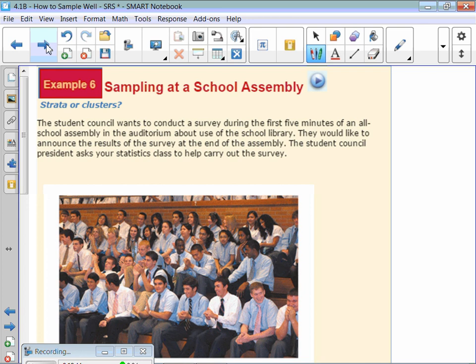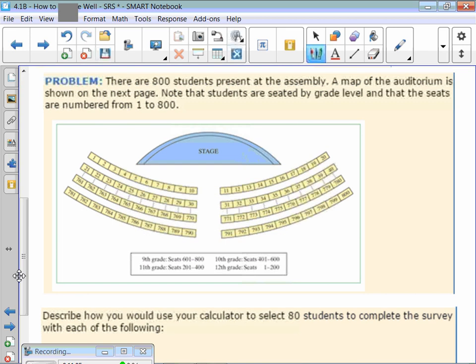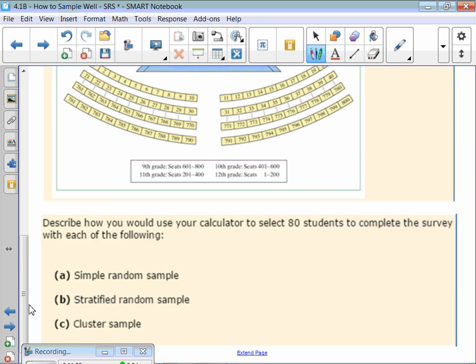The student council wants to conduct a survey during the first five minutes of an all-school assembly in the auditorium about use of the school library. They would like to announce the results at the end of the assembly. There's 800 students present at the assembly and a map of the auditorium is shown below. Students are seated by grade level and the seats are numbered from 1 to 800. The 9th graders are sitting in 601 to 800, 11th graders are 201 to 400, 10th graders are 401 to 600, 12th graders are 1 to 200. They're separated in groups for you. Describe how you would use your calculator to select 80 students to complete the survey with each of the following. Let's say we're going to use our calculator just to do a simple random sample.